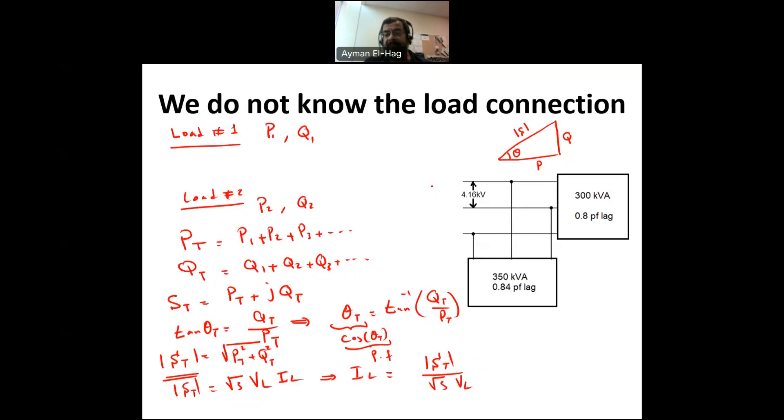If you are given here in the line some resistance R line, and you want to find what is the line losses, P loss is equal to 3 because you have three lines, I line squared times R of the line. So the key point in this type of questions is to find S total, which is the summation of all the P's and all the Q's.